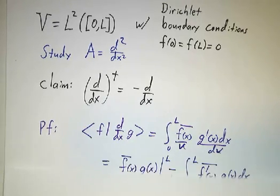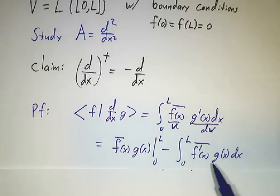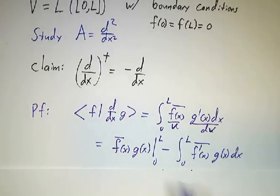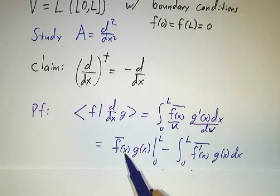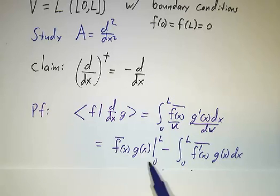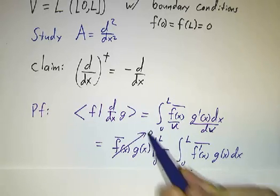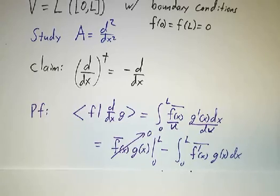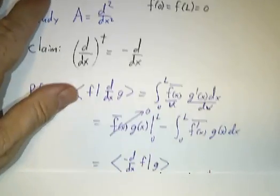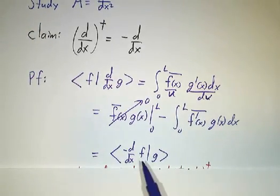Integration by parts gives us uv minus the integral of v du. Because of our boundary conditions, the boundary term is 0: g of 0 is 0, g of L is 0, f of 0 is 0, f of L is 0. So we don't need that term.